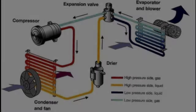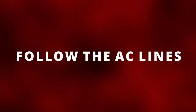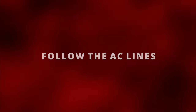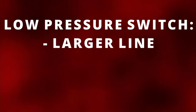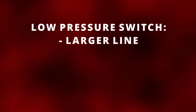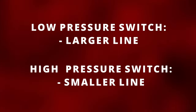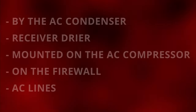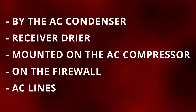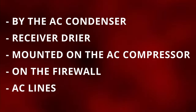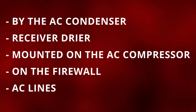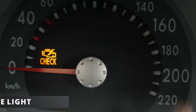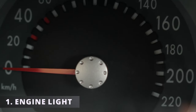The best way to locate the pressure switch is to follow the AC lines. The low pressure switch will be on the larger line, while the high pressure switch will be on the smaller line. The location can vary between cars, so here are some common locations of the pressure switch.